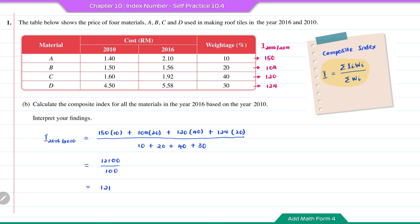Interpreting the findings: when the composite index is above 100, it means there will be an increase compared to the base year. The increase in percentage is 121 − 100 = 21%. This means the price of all materials used in the year 2016 increased by 21% compared to the year 2010.